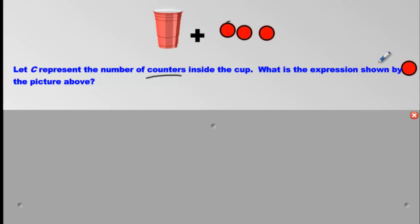Remember last lesson, we call those mystery values variables. We use letters like X and A and W to represent the unknowns. If you see a cup, it's referring to some unknown amount that's inside. It's hidden. The question says let C represent the number of counters. We have to write C. C stands for some number that's inside, and we're going to add to it three more.